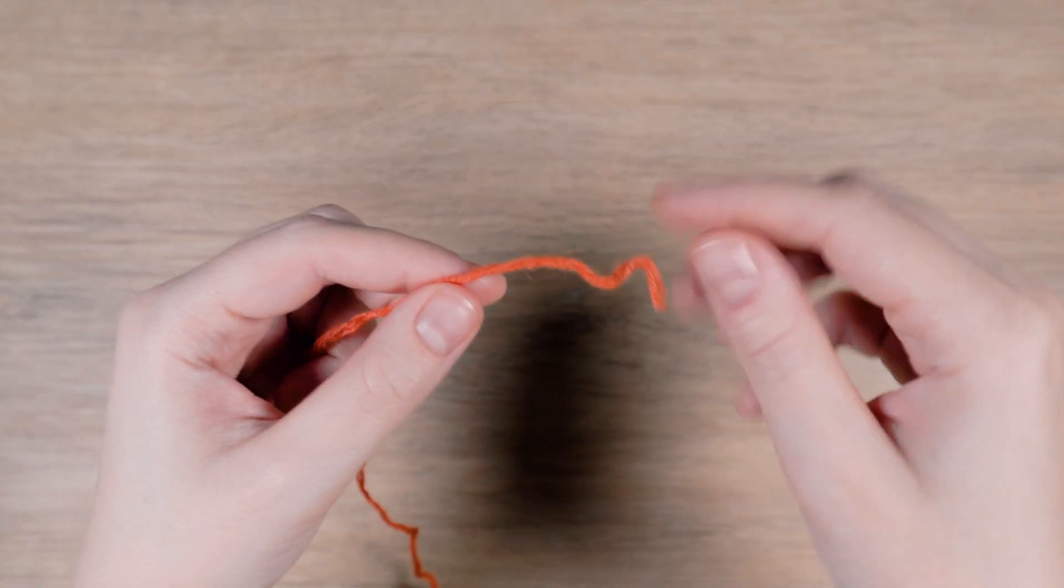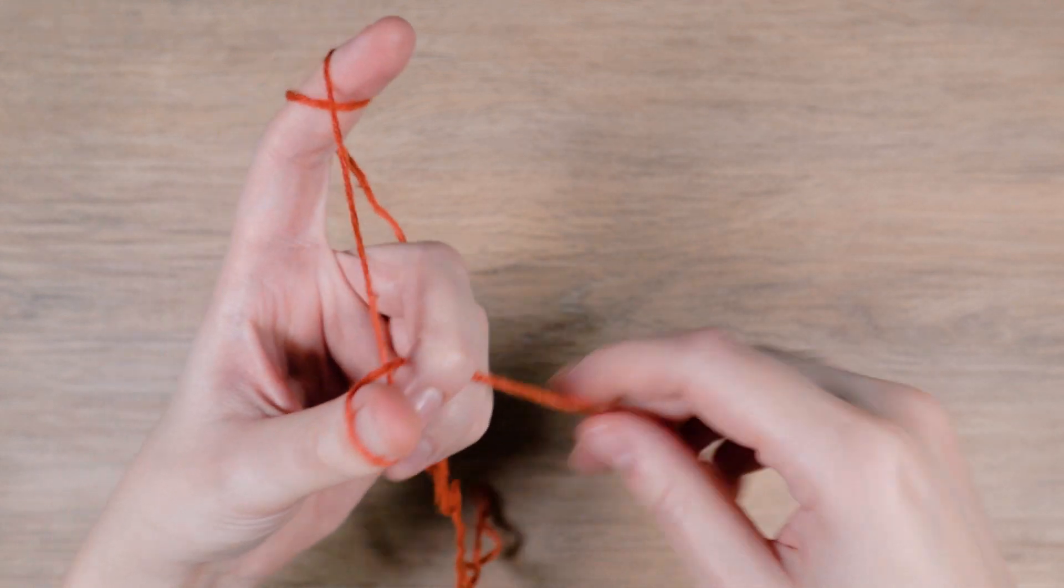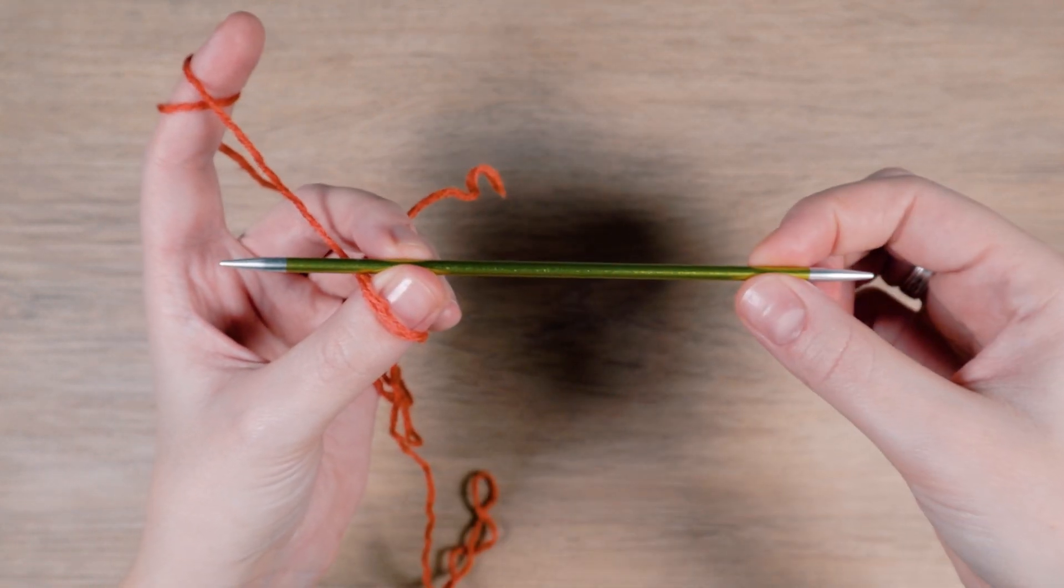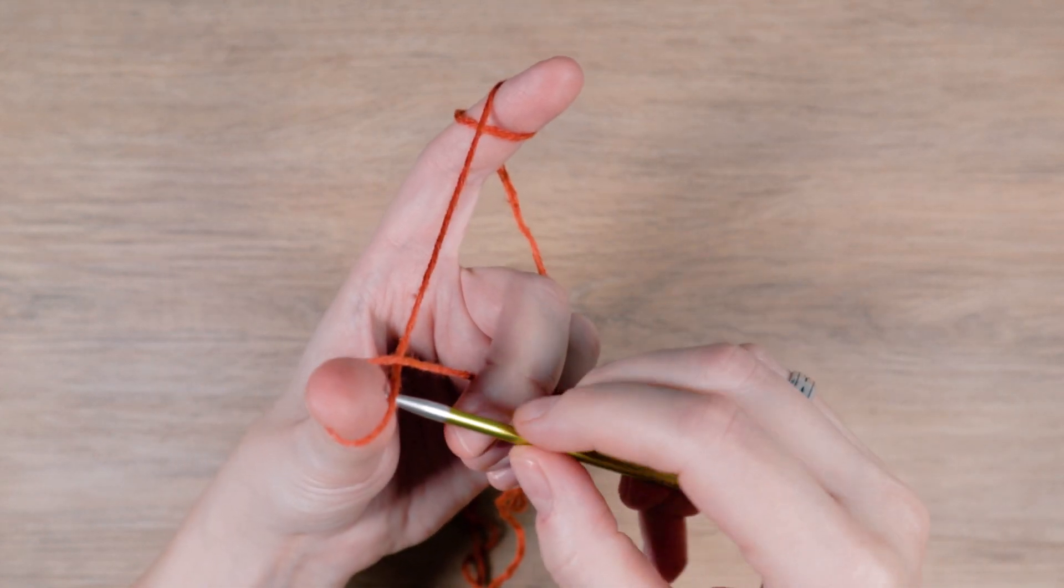First cast on your stitches. The amount of stitches depends on the pattern. I have used the cast on for the Big Maul pattern by Hedgehog Fibers, so I will cast on three stitches like in the pattern.